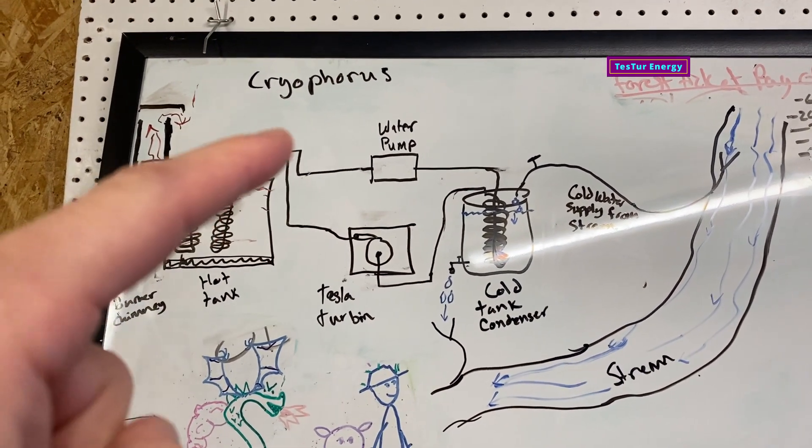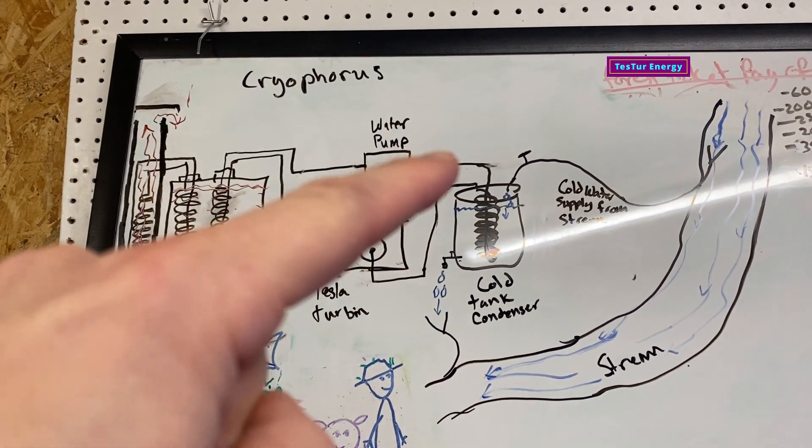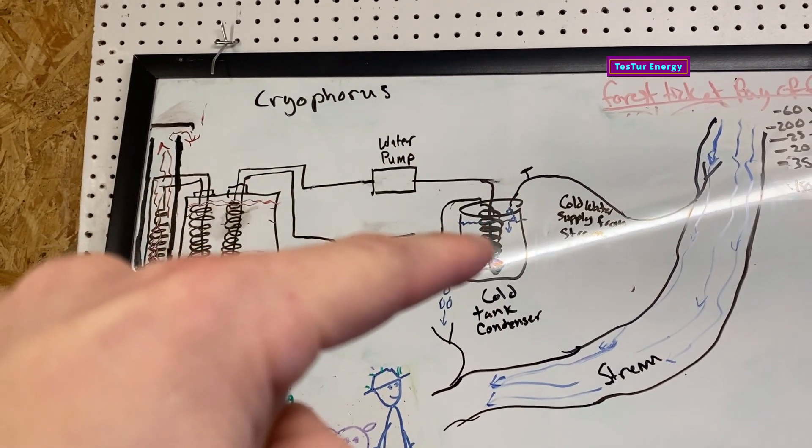What you're going to want to do is just build a hot tank with a copper coil in it. That copper coil will go into the turbine. From the turbine then it'll go from the exhaust of the turbine into the cold tank.